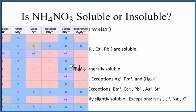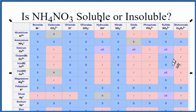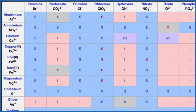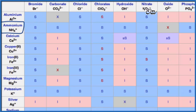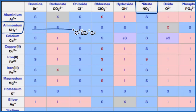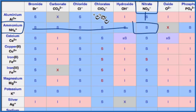Another way we can determine whether NH4NO3 is soluble or insoluble is to look at a solubility chart. We look for ammonium — NH4 plus — at the top, then we look for nitrate. Most of the ammonium compounds are soluble, and the nitrate ions as well. Going over and down, there's the S, so ammonium nitrate according to our chart is soluble in water.